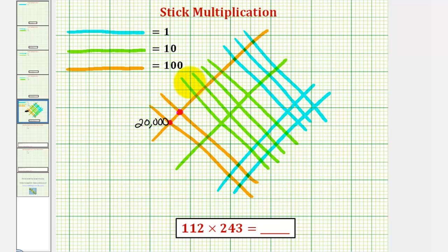Next, each intersection point of an orange and a green represents 100 times 10, or 1,000. Notice how we have one, two, three, four thousand here. So here we have 1,000, and here we have 1,000 plus 1,000, or 2,000.